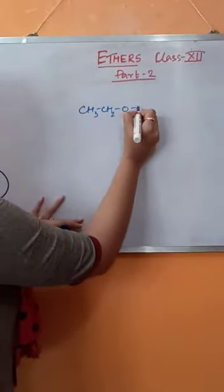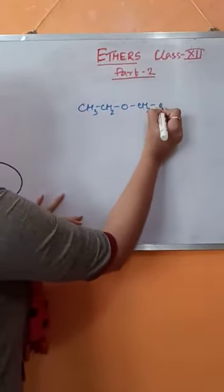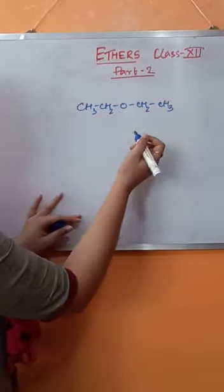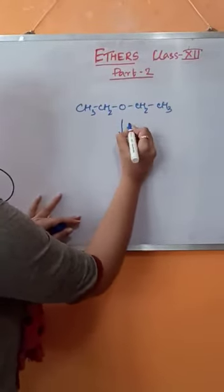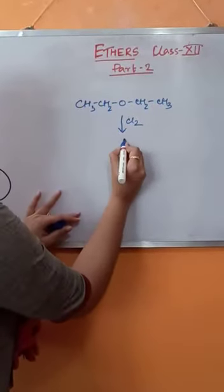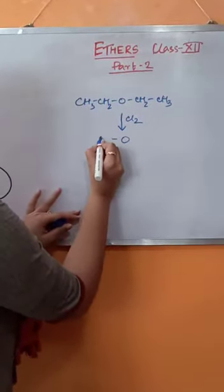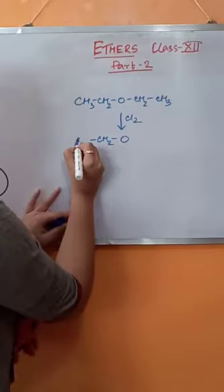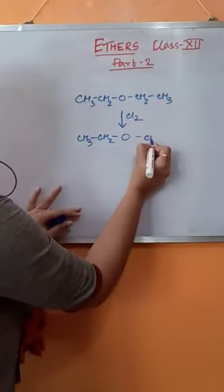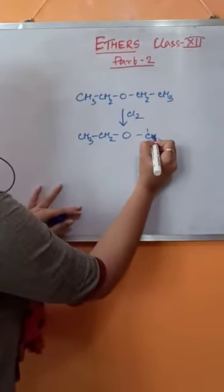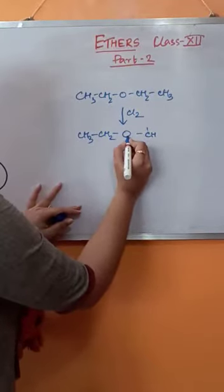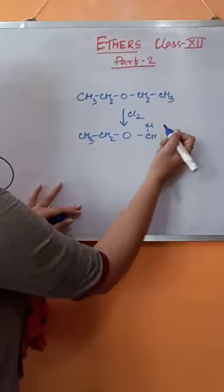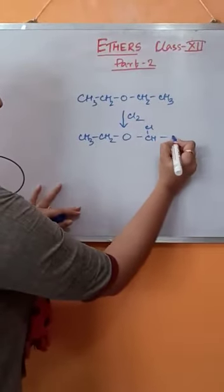When ethers react with chlorine or bromine in dark conditions, then the alpha hydrogen, one of the alpha hydrogens with respect to the oxygen atom, is replaced by a chlorine atom.